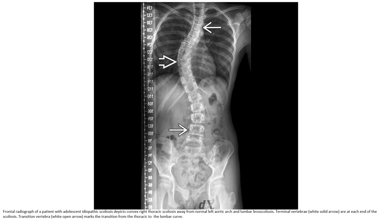This is a radiograph of a patient with adolescent idiopathic dextroscoliosis. There is a convex right thoracic scoliosis away from the normal lateral thoracic arch, and lumbar levoscoliosis. Terminal vertebrae are at each end of the scoliosis. Transition vertebrae mark the transition from the thoracic to the lumbar curve.